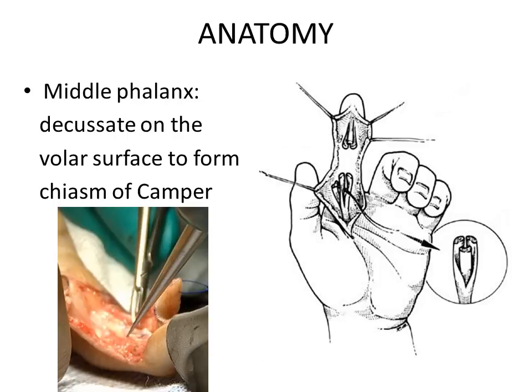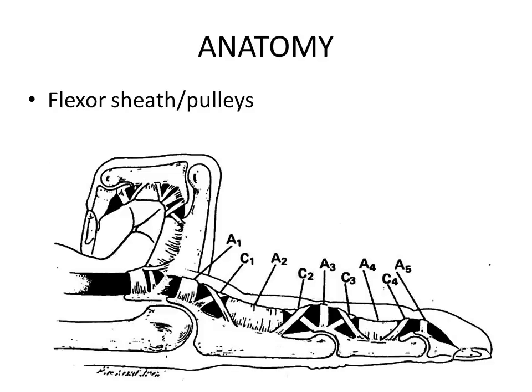As the flexor tendon's function is to help flex the metacarpophalangeal joint and the proximal and distal interphalangeal joints, it is required to reach its final destination — the base of the middle phalanx for the FDS and the base of the terminal phalanx for the FDP. If there were no mechanism to hold the flexor tendons down, any attempt to flex the joints by a longitudinal force along the flexor tendon would result in a phenomenon known as bowstringing, reducing the effectiveness of the tendon and preventing full flexion.